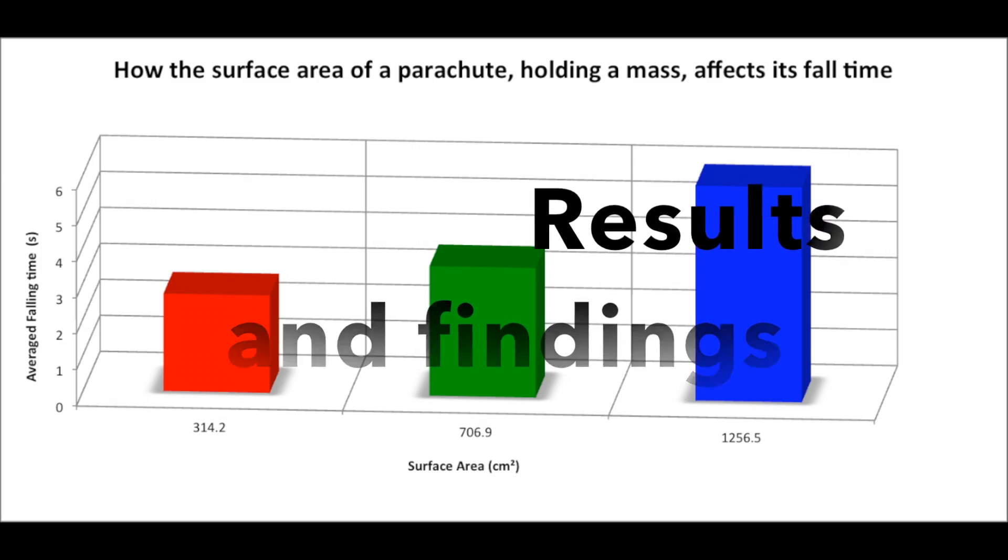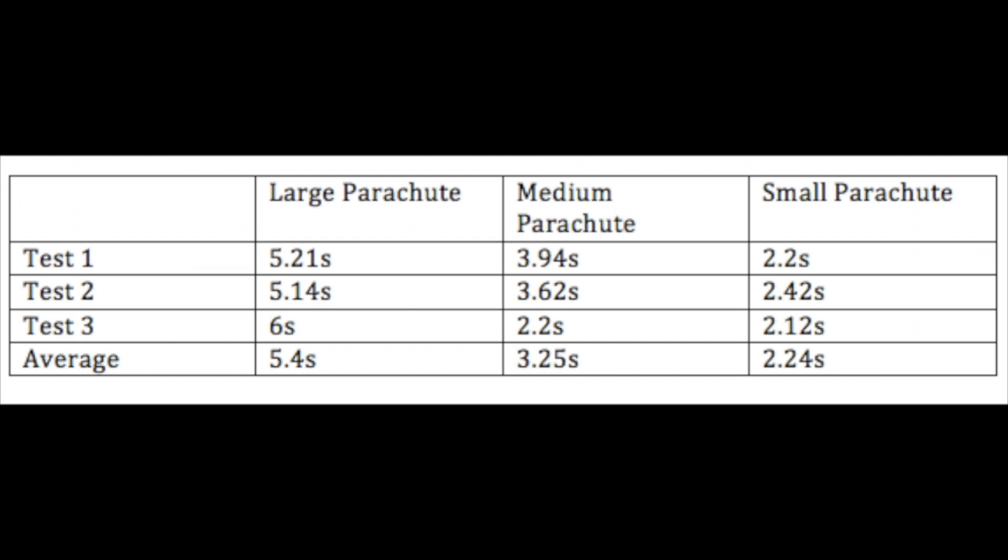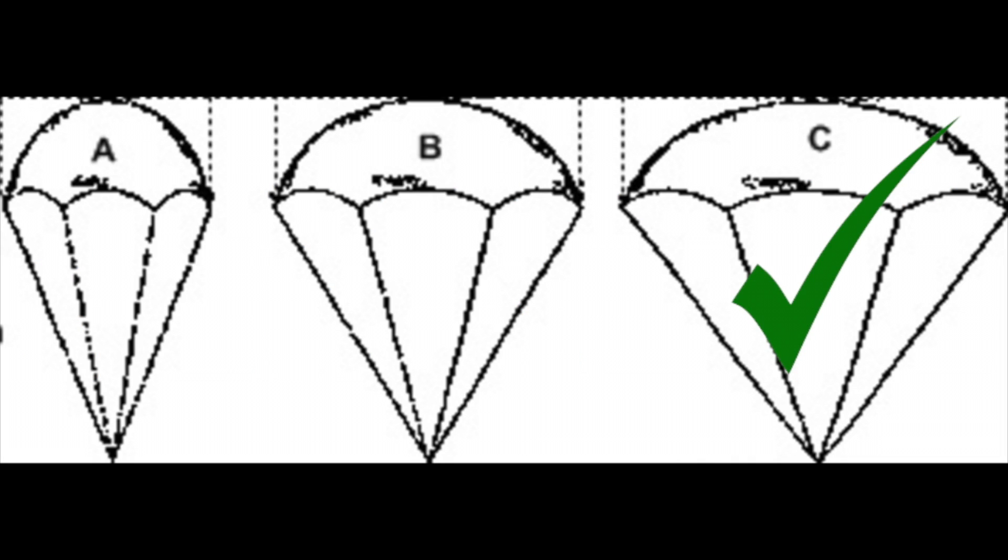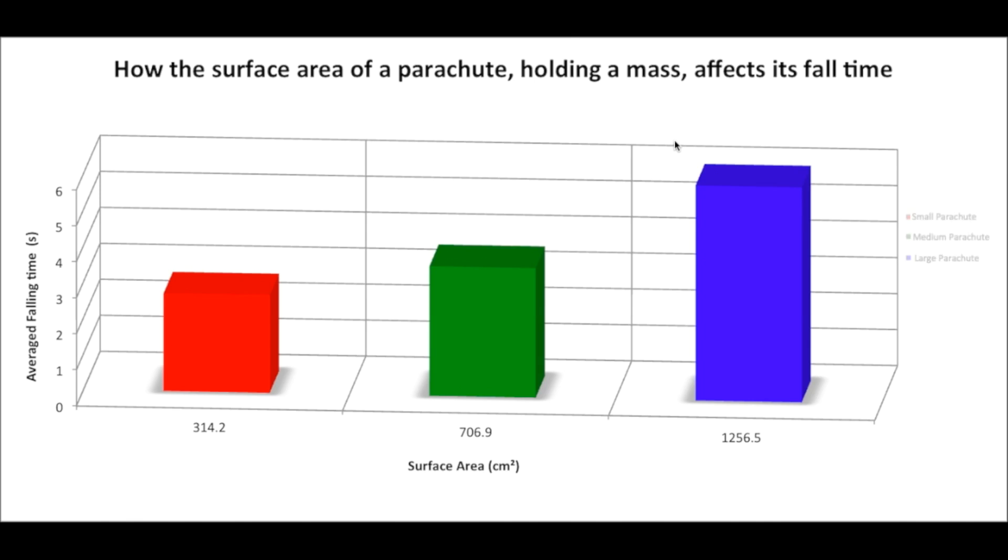Our graph results, based off of an average of each parachute's fall times, has shown us that parachutes with larger surface areas are more effective at slowing the fall of masses. From the data, we see that the parachute with the largest surface area, 1256.5 centimeters squared, took a time of over 5 seconds to fall, more than double the amount of time it took for the smallest parachute with a surface area of 314.2 centimeters squared to fall, which happened to be just over 2 seconds.